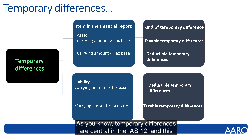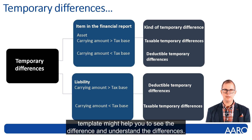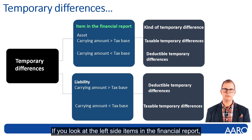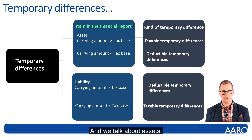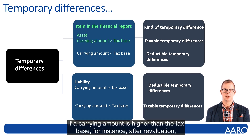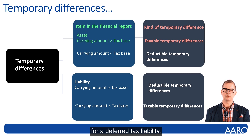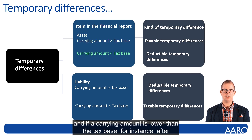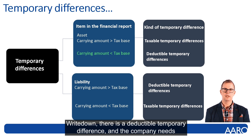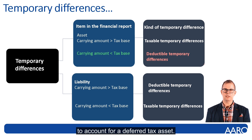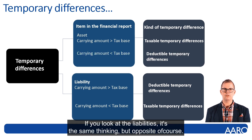As you know, temporary differences are central in IAS 12, and this template might help you to see and understand the differences. Looking at the left side — items in the financial report — if we talk about assets: if a carrying amount is higher than the tax base, for instance after revaluation, there are taxable temporary differences and the company has to account for a deferred tax liability. If the carrying amount is lower than the tax base, for instance after a write-down, there is a deductible temporary difference and the company needs to account for a deferred tax asset. If you look at liabilities, it's the same thinking but opposite.